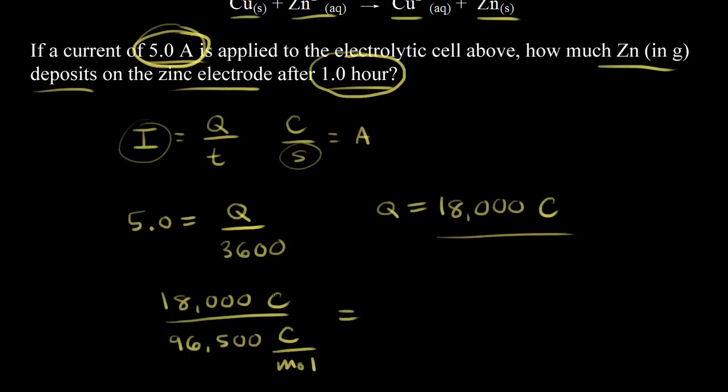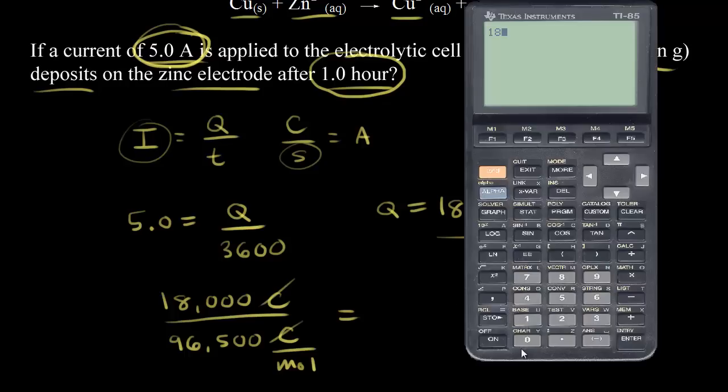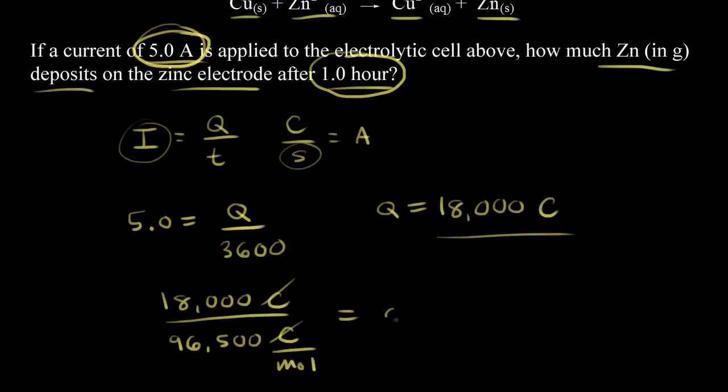If you do it this way, you can see that Coulombs would cancel out, and you would get moles of electrons. So let's do that on the calculator. 18,000 divided by 96,500 gives us 0.19. So this is equal to 0.19 moles of electrons.